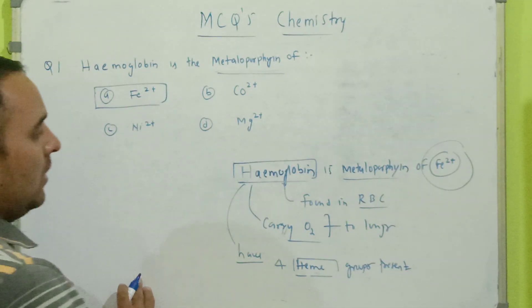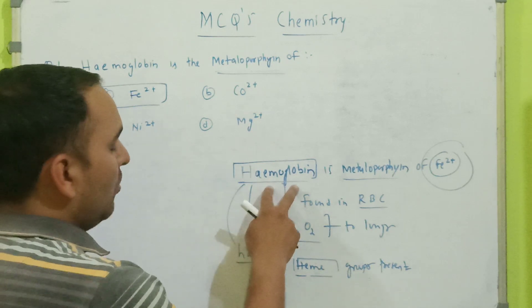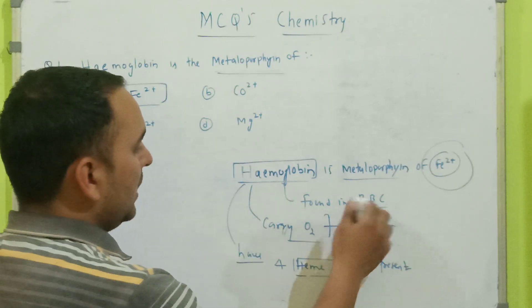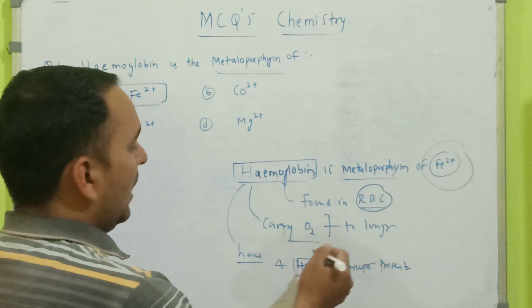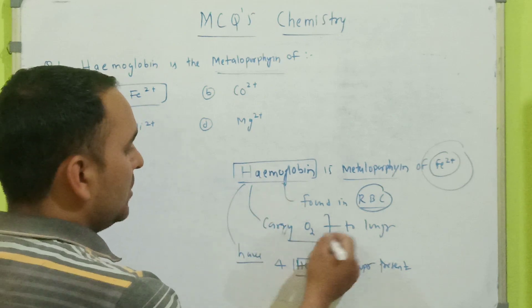Some other knowledge is that hemoglobin is found in RBC, that is in red blood cells, and it is used to carry oxygen to the lungs.